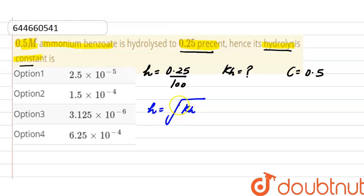Here we have to find out the hydrolysis constant, so we can write it as h squared times concentration equals hydrolysis constant. That is, h² × C = kh.